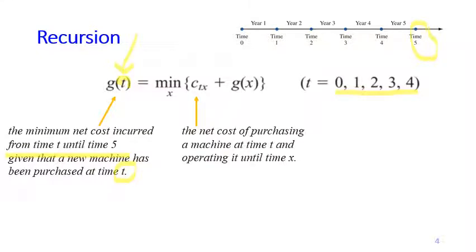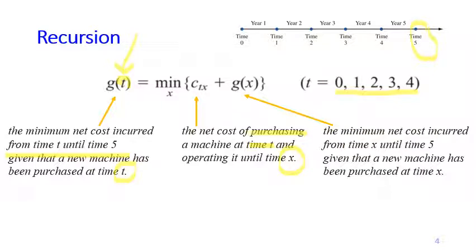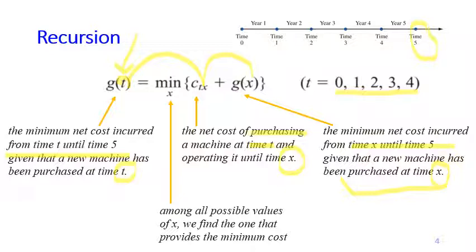The cost is c(t,x) — the cost of purchasing a new machine at time t and then operating it until time x. That's why you see the next component is plus g(x), because we buy a new machine at time t and use it from t until x. The next term g(x) is the cost from x until time 5, given that a new machine has been purchased at time x. Among all possible x, we minimize to find the one that gives the minimum cost.